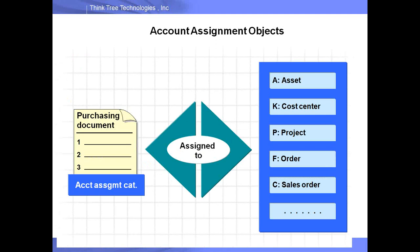The account assignment object tells you the cost object — the purpose for which you are buying the item. Account assignment objects include assets, cost centers, projects, sales orders, and production orders. These are the recipients of the cost. When you buy an item, the cost is assigned to one of these objects.